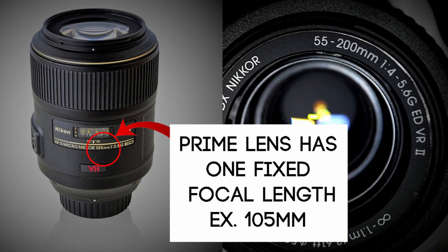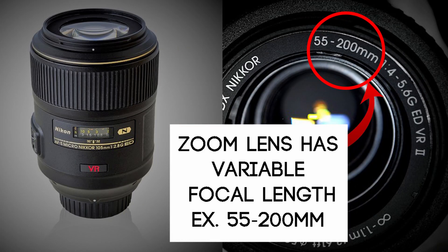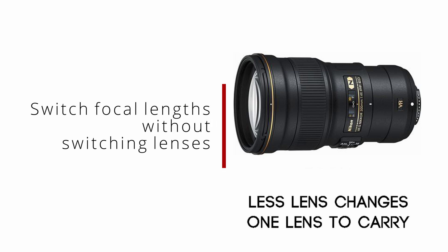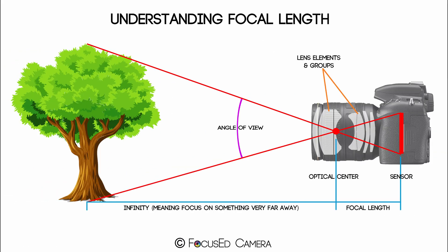Some lenses will have just one number, such as 105mm — this is a fixed focal length, called a prime lens. When you see a range of numbers, such as 18 to 55mm or 55 to 200mm, it means the focal length is variable and the lens has a zoom. A zoom lens allows you to switch between focal lengths so you can shoot different subjects in different scenarios without changing lenses as often. If you want more in-depth information about focal lengths and the differences between wide angle, standard, and telephoto lenses, there is a link in the description.